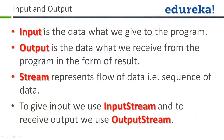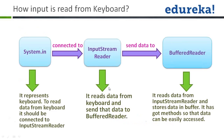To recap: input is what the user gives to the program, output is what we receive on the console window, a stream is the flow of data, and for taking input we use an input stream while for output we use an output stream. You'll understand the BufferedReader linking better when we use it in practice.